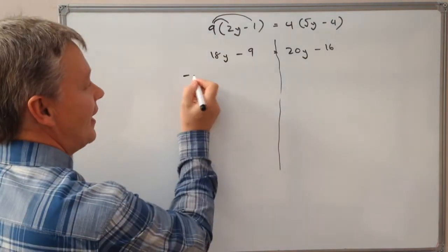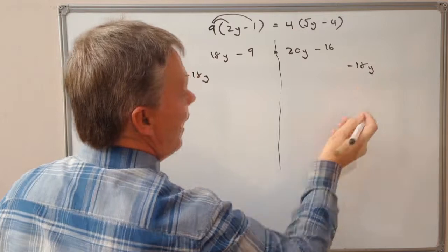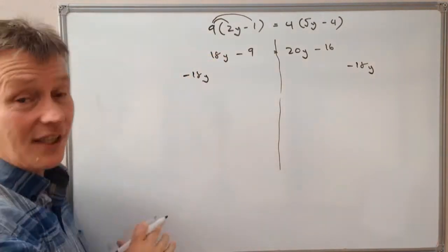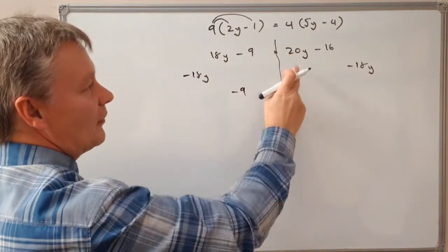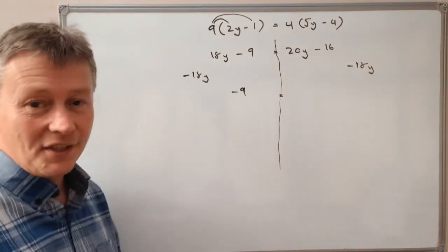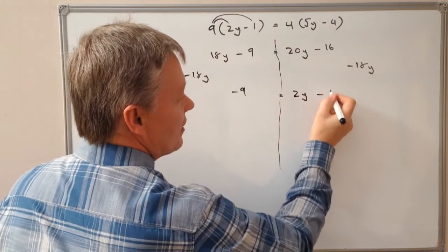If I take 18y from here and 18y from there, I end up cancelling these out, so I end up with minus 9. And on this side, I've got 20y minus 18y is 2y and I've still got minus 16.